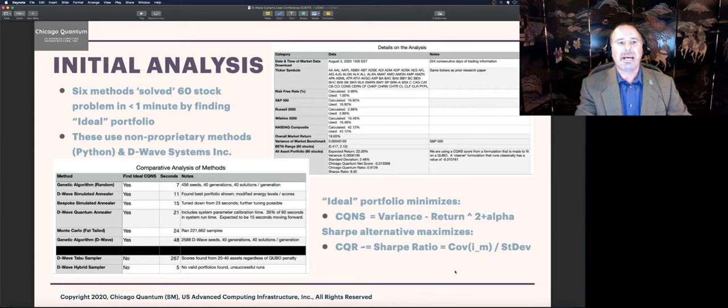So our last paper, 60 assets, we had six methods that solve it in under a minute by finding either the ideal portfolio or the best portfolio. That was using both non-proprietary methods on Python 3.7 or the D-wave system. The best model was genetic algorithm with a random seed, took seven seconds. By the way, at the end of the full research project, it was 48 seconds to run the genetic algorithm with D-wave. We think it was a memory issue. We went back and re-ran it, it took six seconds. Seven or six seconds to do genetic algorithm. Eleven or 15 seconds to do simulated annealer. The quantum annealer took 21 seconds, but that included all of our runs, all of our calibration work. We expect that to be 15 seconds if we were to do a thorough research engagement again. And then the Monte Carlo fat tailed to 24 seconds. Taboo sampler took 267 seconds and didn't give us very good solutions.